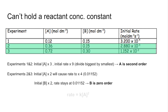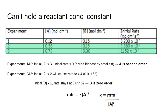Now we've got the orders, the rate equation is rate equals k times the concentration of A squared. If we had to solve for k, it would be rate over the concentration of A squared. Don't forget your units — they come out as dm³ mol⁻¹ s⁻¹.